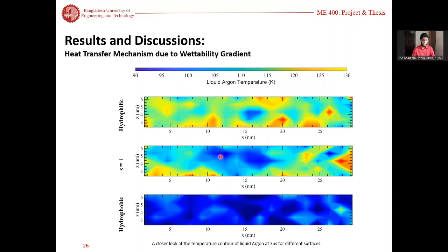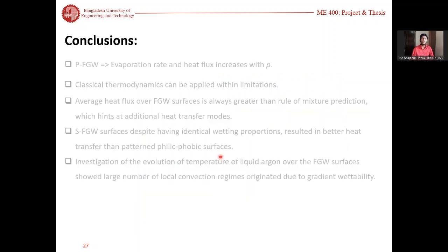To conclude, pFGW surface gives higher evaporation rate and heat flux as the value of p increases. Classical thermodynamics can be applied within certain limitations. Average heat flux over FGW surface is always greater than the rule of mixture prediction, which indicates some additional mode of heat transfer. sFGW surfaces having identical wetting proportions yet give better heat transfer than the patterned philic-phobic surfaces that are traditionally used. We understood that this enhancement is due to the local convection regimes that are generated by the gradient of the surface.